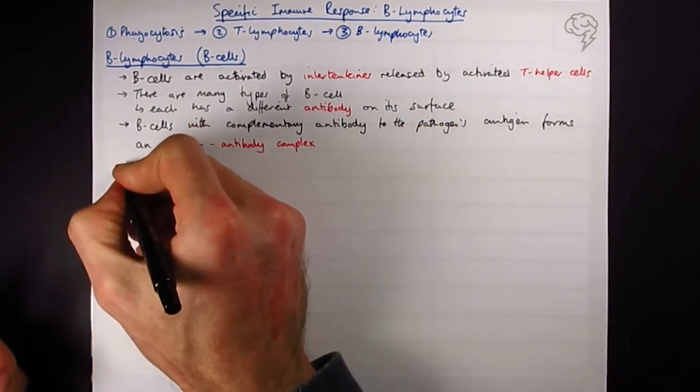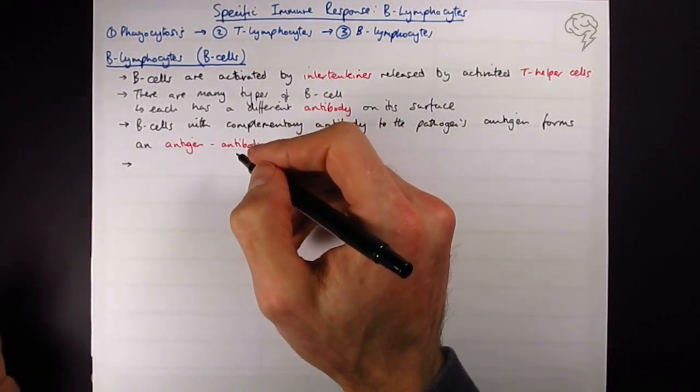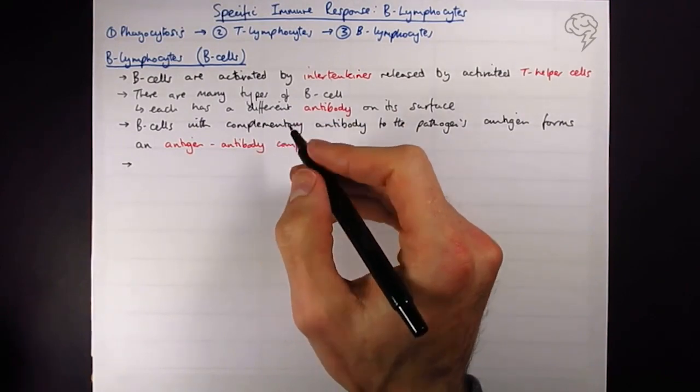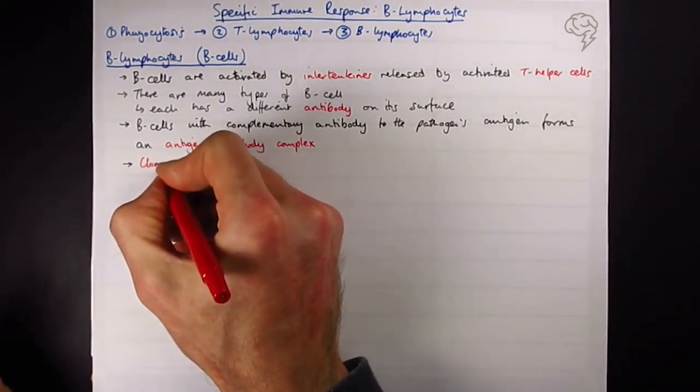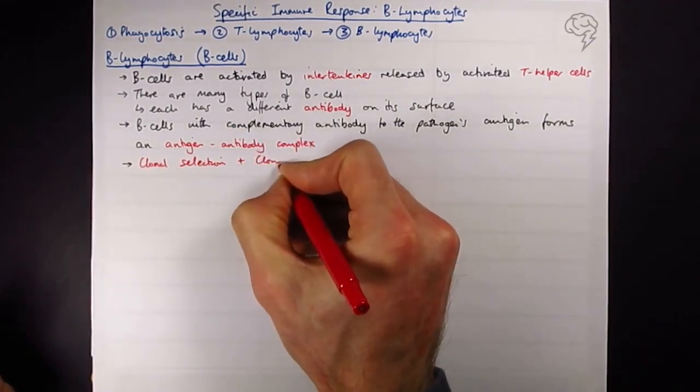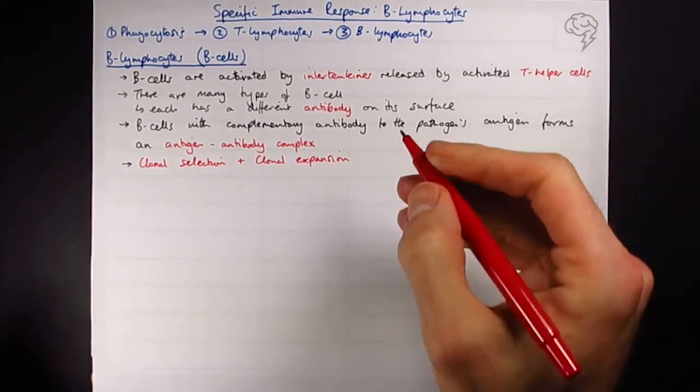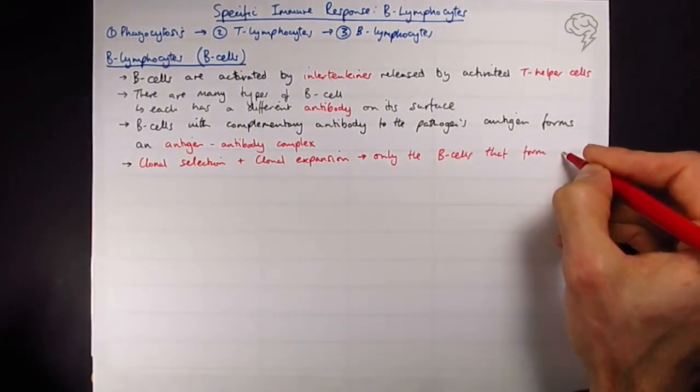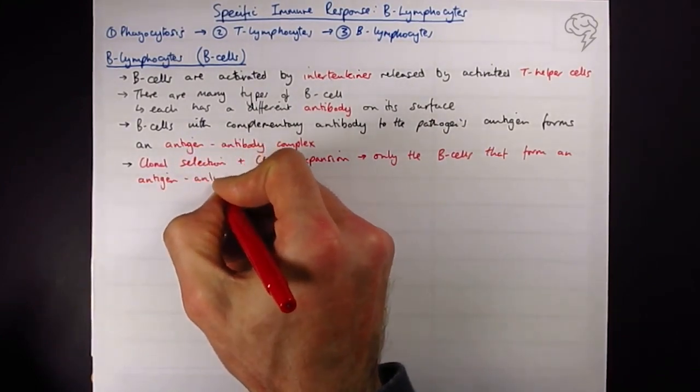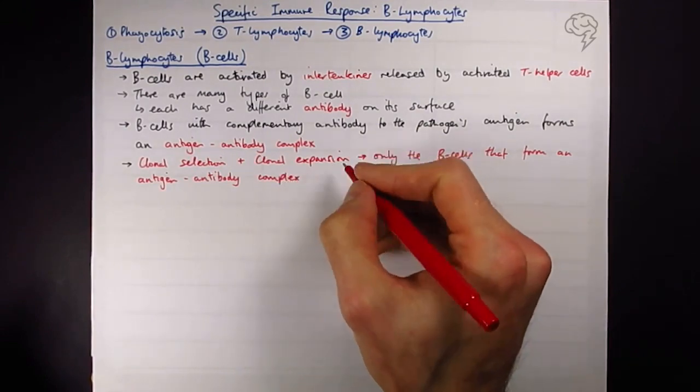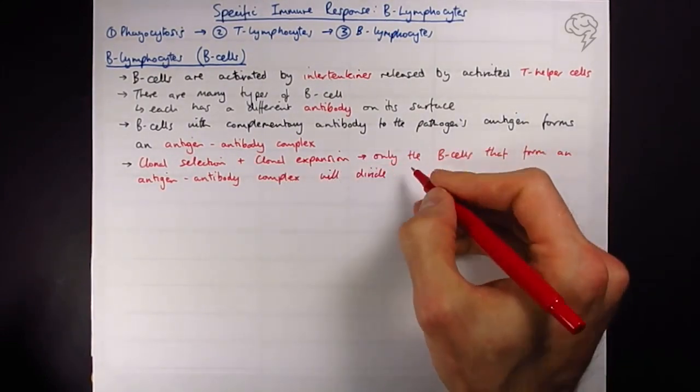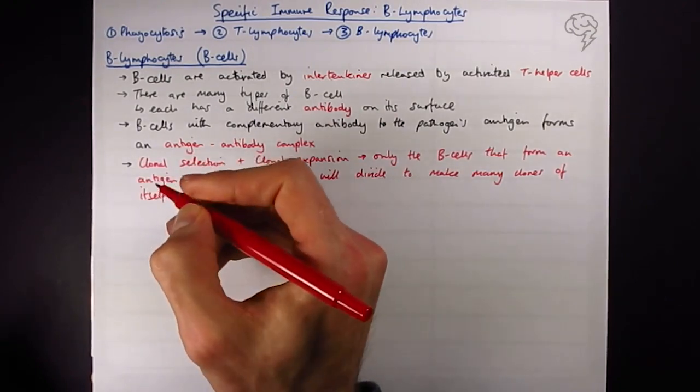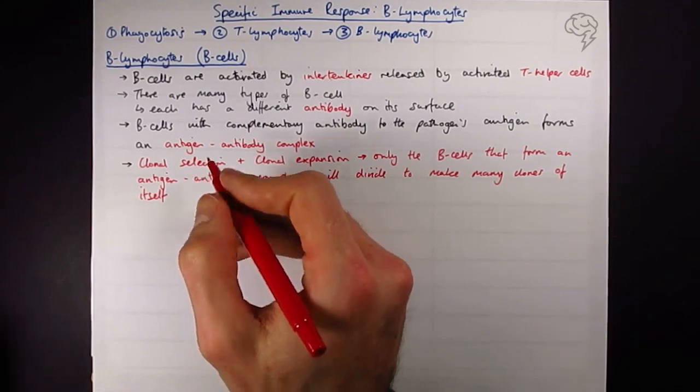Again, if we remember from the T lymphocytes video, that clonal selection will take place and this means that only the B cells that form an antigen antibody complex will divide to make many copies of itself. And so the selection process is clonal selection and the making many copies of itself should be called clonal expansion. These clones, these many, many copies, are going to be plasma cells and memory cells.